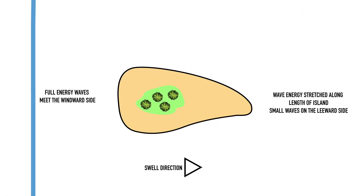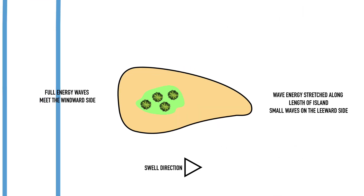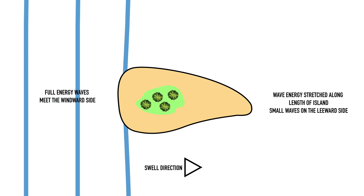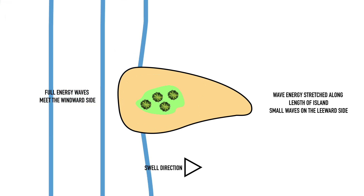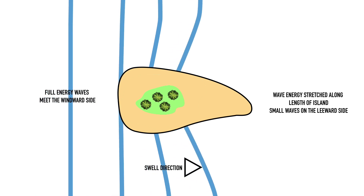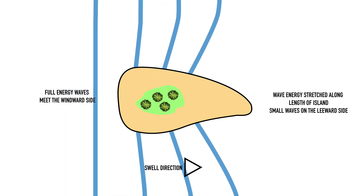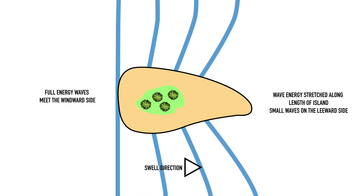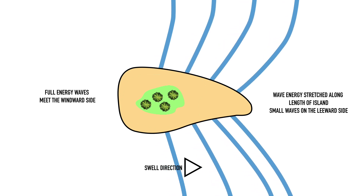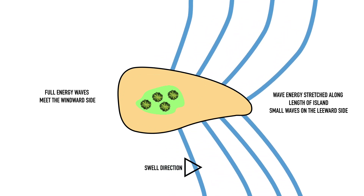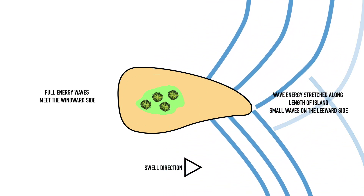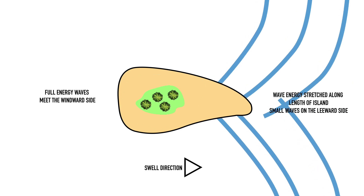Refraction can also stretch the energy of a wave, like what we see on the back of islands that interrupt traveling swell. The closest side of the island meets the swell first and the waves are led around the coast of the island, diminishing in power the further they're stretched. What you will find is a much smaller and calmer sea on the lee shore of the island.